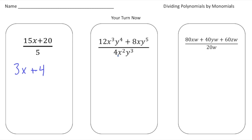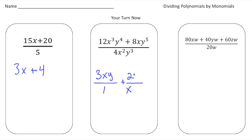The second problem: 12x cubed y to the fourth plus 8xy to the fifth, divided by 4x squared y cubed. 12 divided by 4 is 3, x cubed divided by x squared is x, and y to the fourth divided by y cubed is y, giving 3x times y over 1. Then 8 divided by 4 is 2, x divided by x squared leaves x in the denominator, and y to the fifth divided by y cubed is y squared, giving 2y squared over x. So the answer is 3xy plus 2y squared over x.